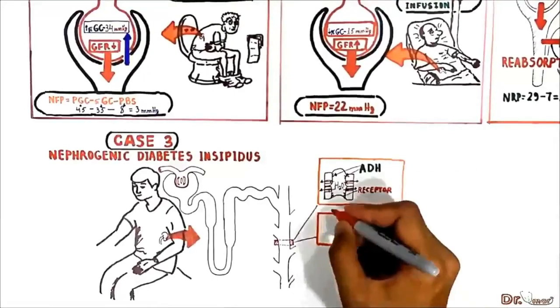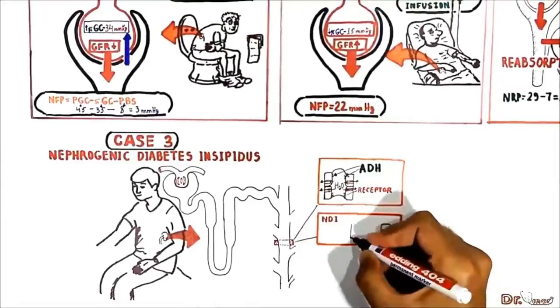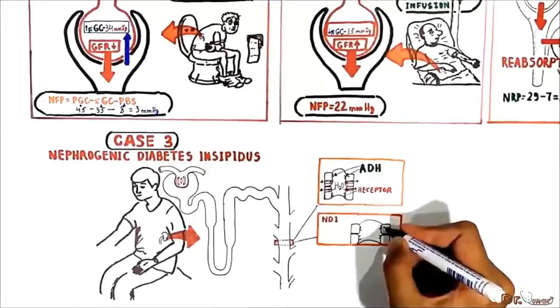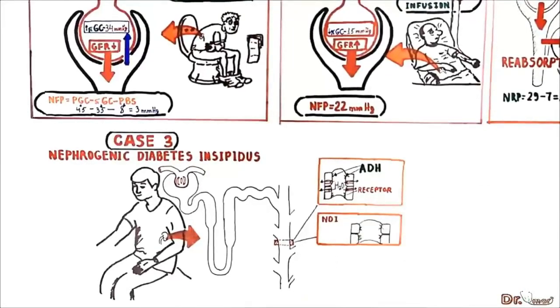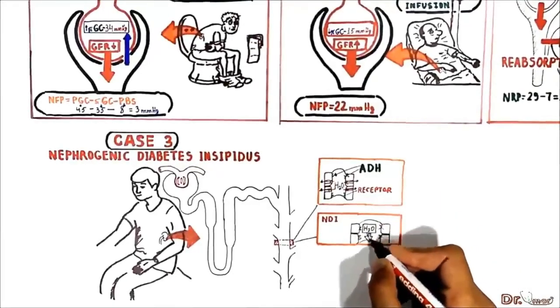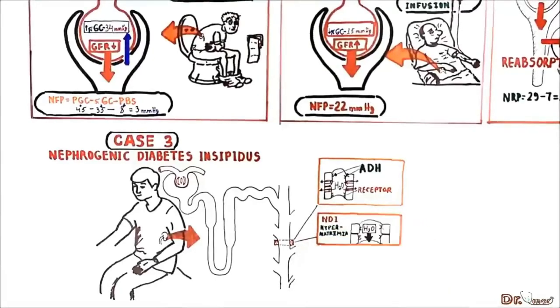In nephrogenic diabetes insipidus, anti-diuretic hormone receptors at the collecting ducts are not functioning. As a consequence, the patient loses free water and gains sodium, developing hypernatremia.